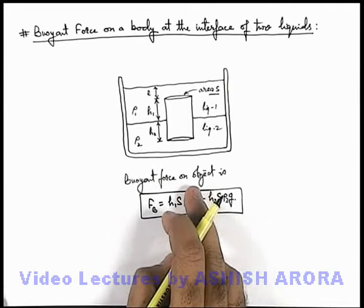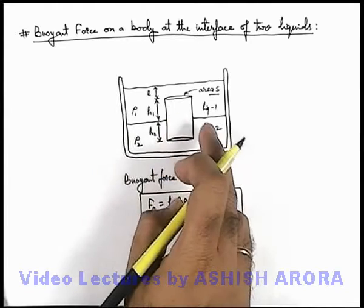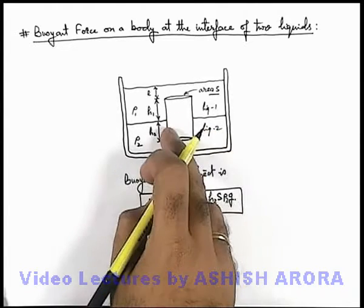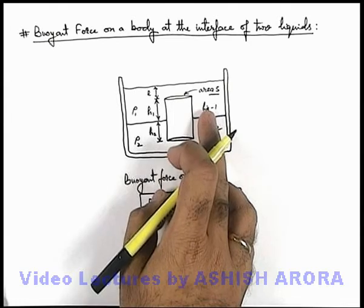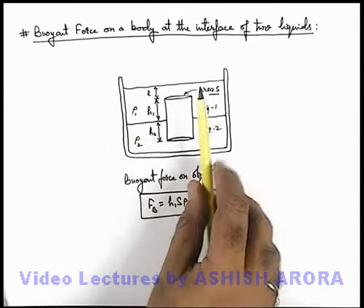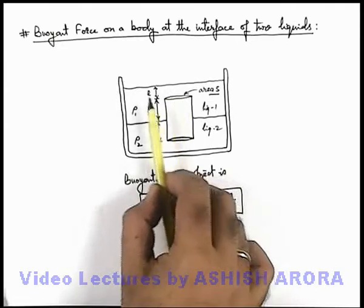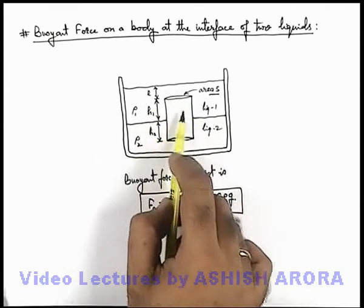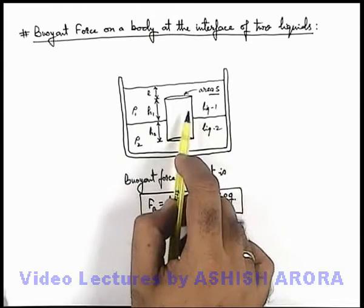But here if we wish to calculate the total force applied by liquid 1 on body and liquid 2 on body, that will be totally different. Because if we talk about liquid 1, we already studied that for the lateral surface of the cylinder, net force acting on it will be zero because all the forces are in radially inward direction and horizontal, so these will cancel each other.